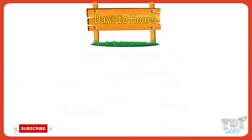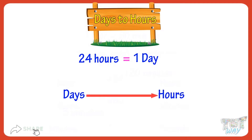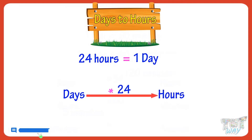Days to hours. Kids, there are 24 hours in a day. So to convert days to hours, we need to multiply days with 24.